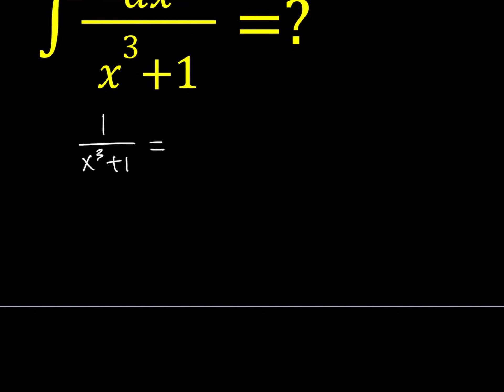First of all, let's go ahead and factor the denominator. Since it's a sum of two cubes, we can write it as x plus 1 multiplied by x squared minus x plus 1.